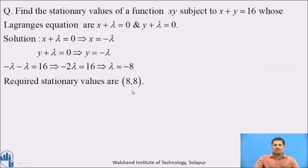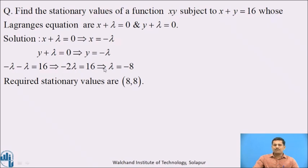The problem is to find the stationary values where Lagrange's equations are provided. From the first equation, x + λ = 0, we get x = −λ. From the second, y + λ = 0, so y = −λ. Substituting into the condition x + y = 16 gives −λ − λ = 16, so −2λ = 16, which implies λ = −8. Replacing lambda in both equations gives x = 8 and y = 8, which is the required stationary value of x·y.